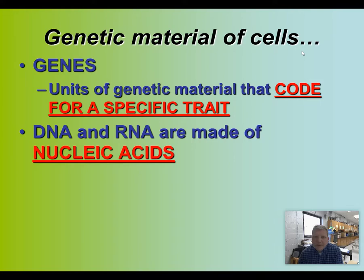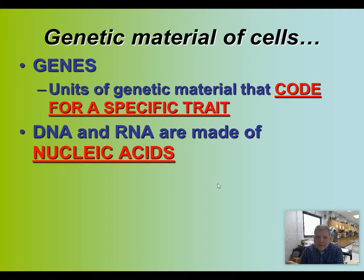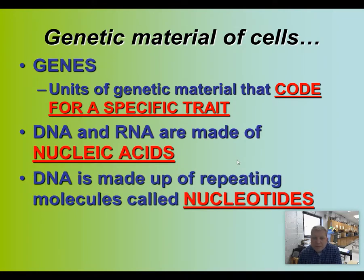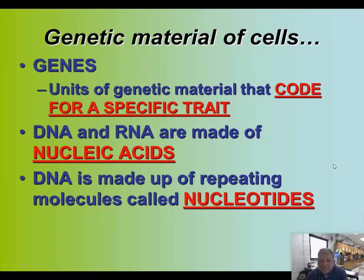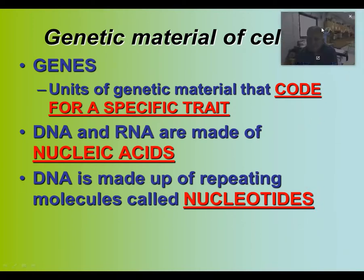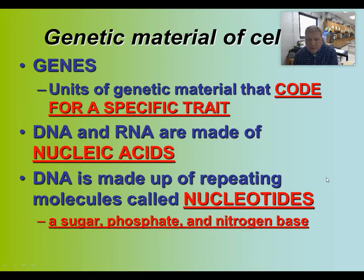DNA and RNA are made up of nucleic acids. Nucleic acids are basically the building blocks of RNA and DNA, and they are one of the four macromolecules — nucleic acids, carbohydrates, lipids, and proteins. DNA is made up of repeating molecules called nucleotides, and a nucleotide contains a sugar, a phosphate, and a nitrogen base.